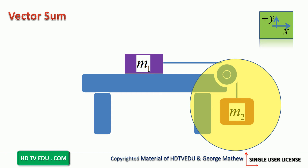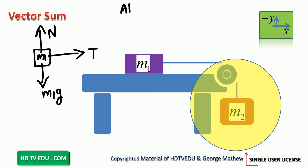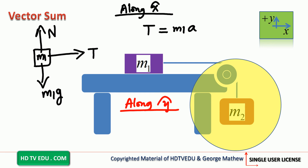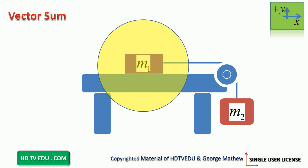Now let us do the vector sum. For mass M1: tension is to the right, normal force is vertically up, gravitational force is vertically down. Along x, force to the right is positive, so T equals M1a. Along the vertical, normal force is positive, gravitational force is negative, and the net force is zero — no acceleration along the vertical. For mass M2: tension is vertically up and gravitational force is vertically down; it is accelerating down.